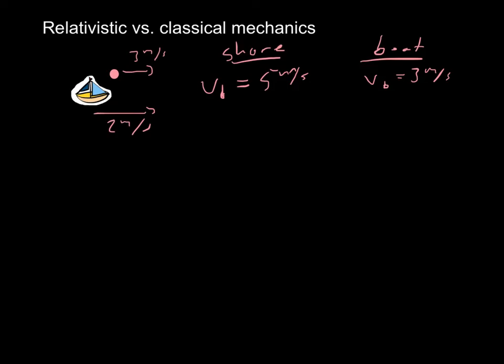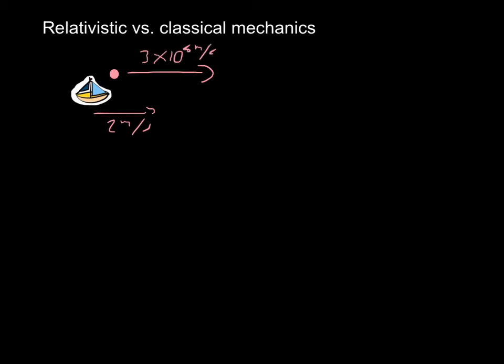Relativistic mechanics, or special relativity, as Einstein called it, came around with kind of an interesting question. So instead of our ball coming out of here, now it's light. And light travels at a speed of 3 times 10 to the 8th meters per second.